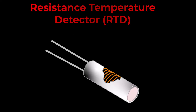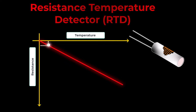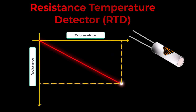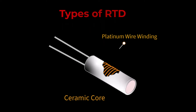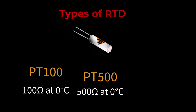RTDs are typically made of pure metals, with platinum being a common choice due to its stable and linear resistance-temperature relationship. As temperature changes, the resistance of the metal changes proportionally. The RTD is connected to a measuring instrument that sends a known electrical current through it. The voltage drop across the RTD is measured, and the resistance-temperature relationship is used to calculate the temperature. Common types include PT100, PT500, and PT1000, denoting different resistance values at zero degrees Celsius.